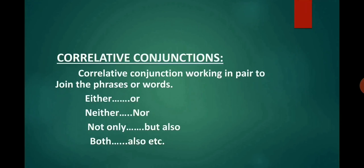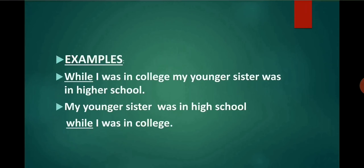The third and last type of conjunction is co-relative conjunction. As suggested by their name, co-relative conjunctions correlate — they work in pairs to join phrases or words. Some co-relative conjunctions are: either/or, neither/nor, both/and, not only/but also, etc.